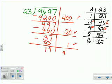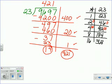400 plus 20 plus 1 equals 421. I have a remainder of 14. That becomes my numerator. Let me fix that. My marker doesn't want to work here. 14, and my denominator is my divisor, 23rds. So 9,697 divided by 23 equals 421 and 14 23rds.